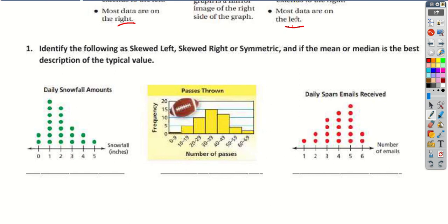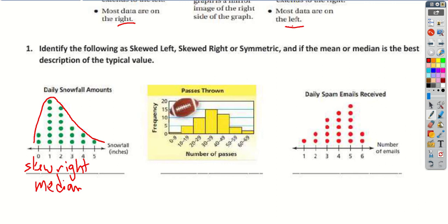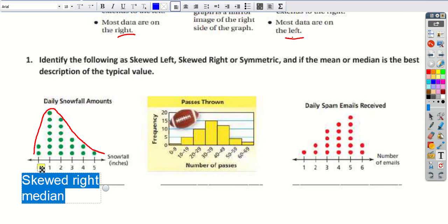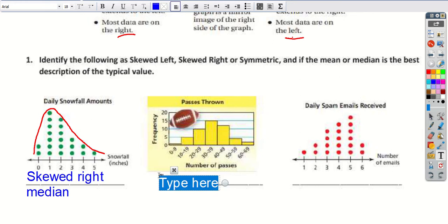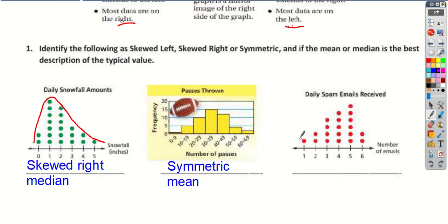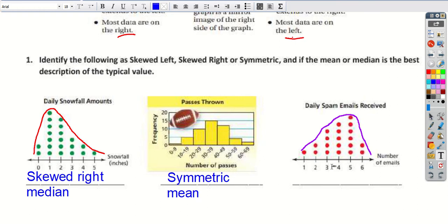So identify which is the best description. Here you can see the curve — this is skewed to the right. So this is a skew right, and in this case the median is going to be the better value. The second one here is going to be almost right down the middle. So this one is symmetric, and we want to pick the mean for this one. You can see the tail here is on the left side. So this is skewed to the left, and we want to pick the median again. Remember, the tail tells us left or right.